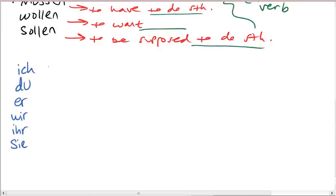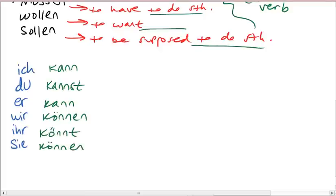Let's start out with können. So ich kann. And you can repeat after me. Du kannst. Er kann. Wir können. It's different. Ihr könnt. Aha. Und sie können.